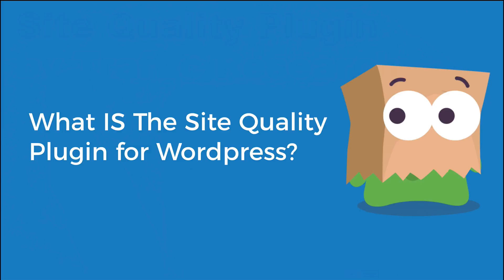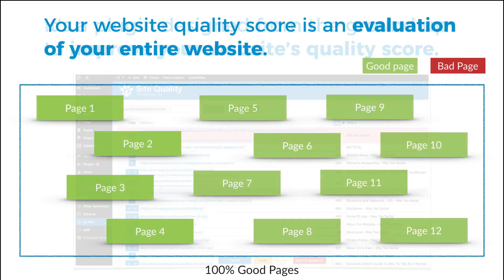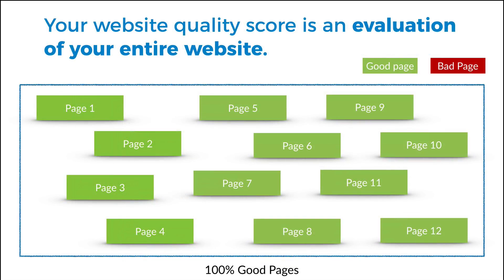So what is the Site Quality plugin for WordPress? As I mentioned, it's a plugin designed from the ground up to improve your website's quality score. What do I mean by quality score? It's kind of like an evaluation of your entire website — Google looks at all the pages on your website and makes up its mind: is this a good website or not?